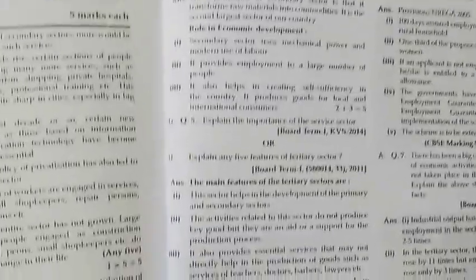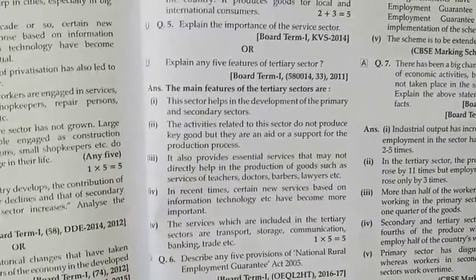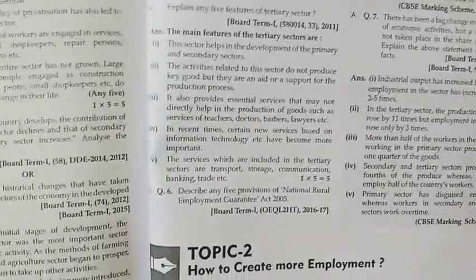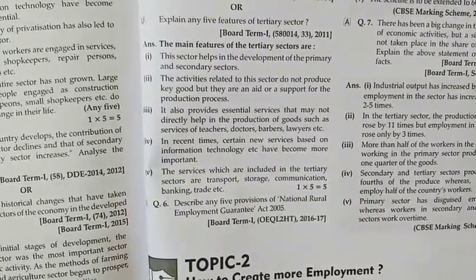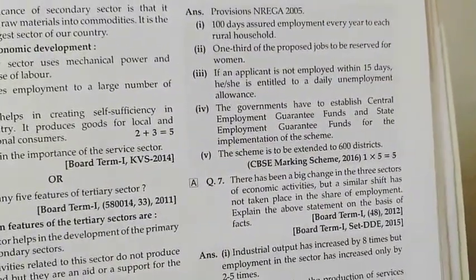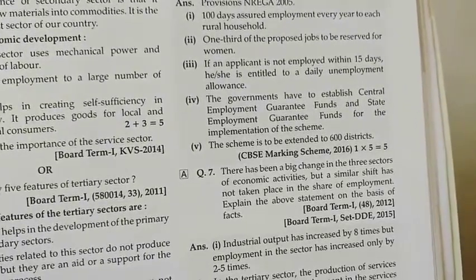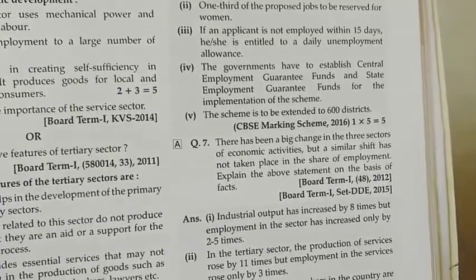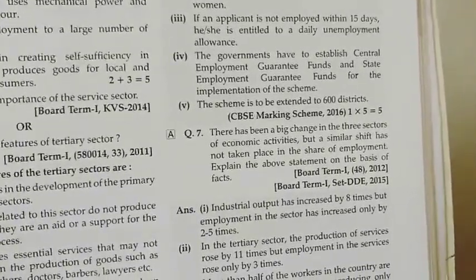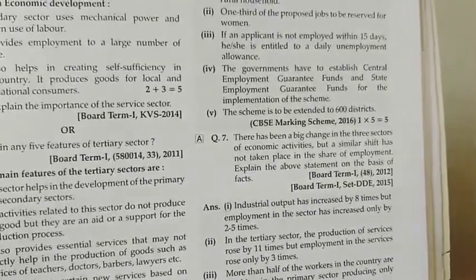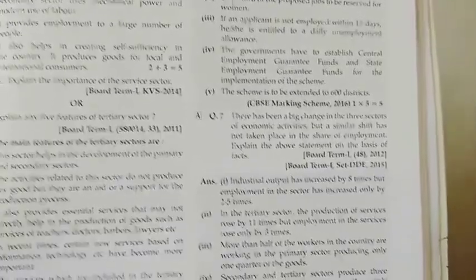Similarly, explain the importance of the service sector or five features of the tertiary sector — I think this is much clearer now. Then: describe any five provisions of the National Rural Employment Guarantee Act 2005 — NREGA. You can write that it provides 100 days of employment, provides unemployment allowances if employment is not provided within 15 days, and the government has extended the scheme to 600 districts. You can find two more points from the NREGA section I have marked for you.